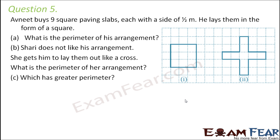Question number 5. Avneet buys 9 square paving slabs each with a side of half meter. He lays them in the form of a square. What is the perimeter of his arrangement? So that means each of these smaller squares which you see, these are the paving slabs whose side is half meter.